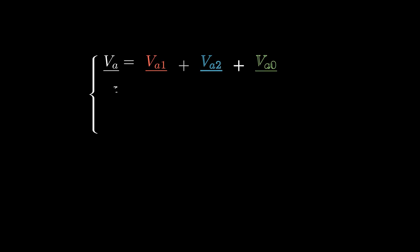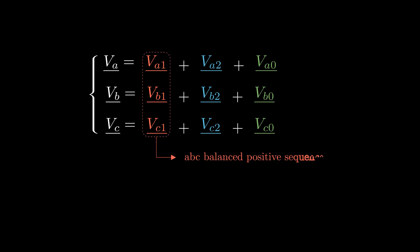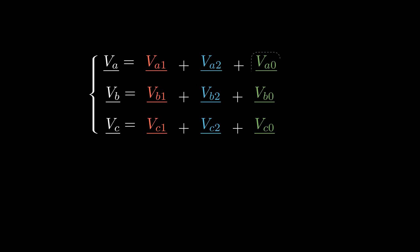We'll start by expressing the three imbalanced voltages as the sum of three components. The first corresponds to the positive sequence, the second to the negative sequence, and the third is the zero sequence.